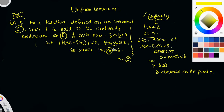So this is all about uniform continuity. The uniform continuity definition states that whenever mod of f of x1 minus f of x2 is less than epsilon, for each epsilon greater than 0, there exists a delta greater than 0. So when mod of f of x1 minus f of x2 is less than epsilon, the function is uniformly continuous.